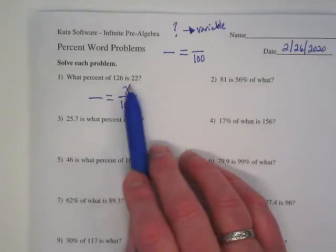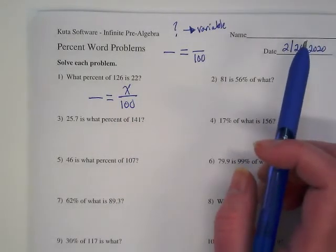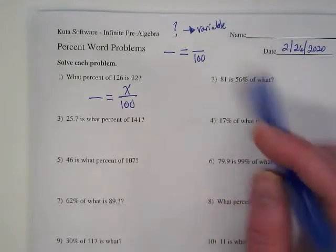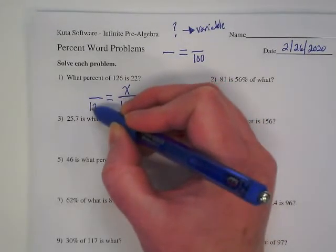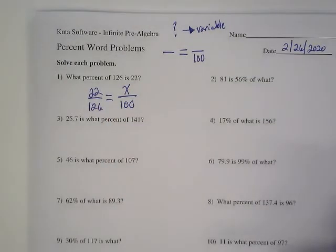Of 126 is 22. Which of these is the part and which is the whole? I want to talk about 126 being the whole and the part being 22. It's not because 126 is bigger than 22.